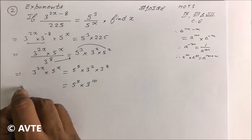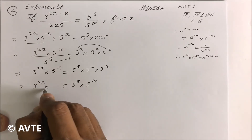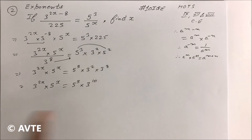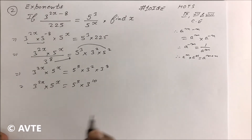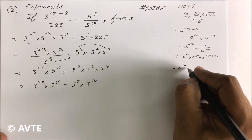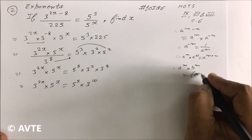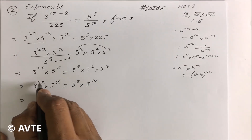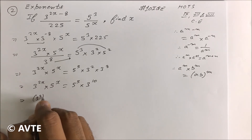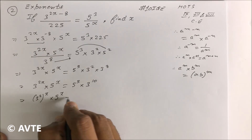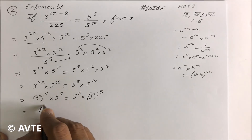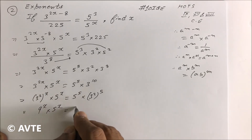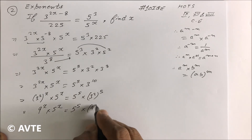Now on the left side we have 3 raised to power 2x into 5 raised to power x. We cannot directly compare, so we apply the formula a^m into b^m equals (ab)^m. We rewrite 3 raised to power 2x as 3 raised to power 2, raised to power x, which is 9 raised to power x. So we get 9 raised to power x into 5 raised to power x equals 5 raised to power 5 into 9 raised to power 5.